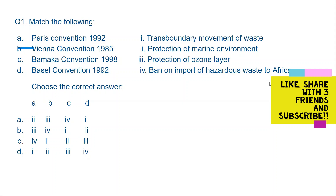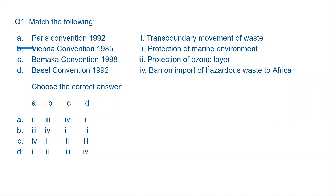Question number one: Match the following. A. Paris Convention 1992, B. Vienna Convention 1985, C. Bamako Convention 1998, D. Basel Convention 1992. We know that the Vienna Convention 1985 was about the protection of the ozone layer, and the Basel Convention is about the transboundary movement of waste. So D matches with 1 and B matches with 3. Option A is the correct answer.